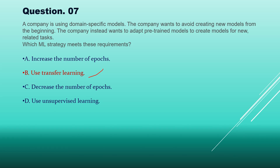Transfer learning involves taking a pre-trained model — which has been trained on a large dataset — and adapting it to new related tasks. It has multiple advantages, making option B the correct answer.